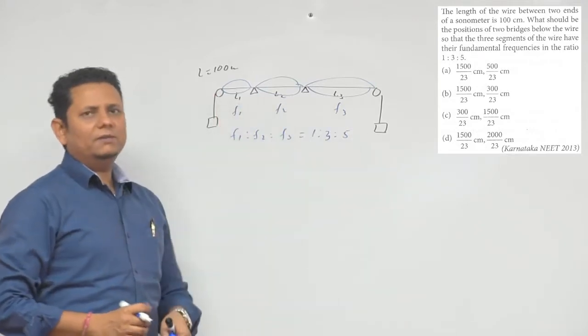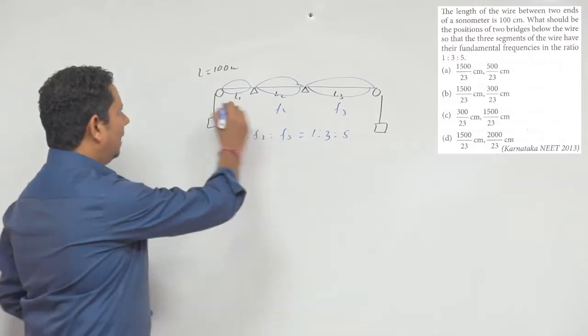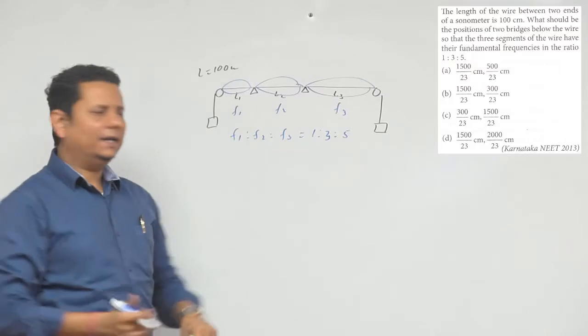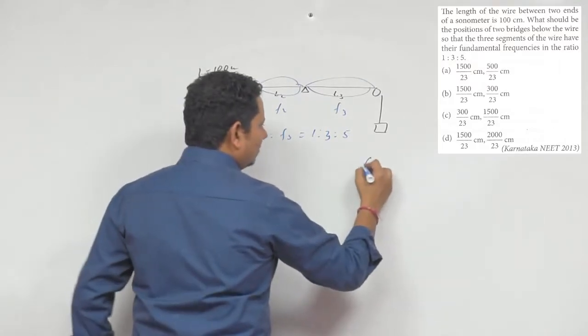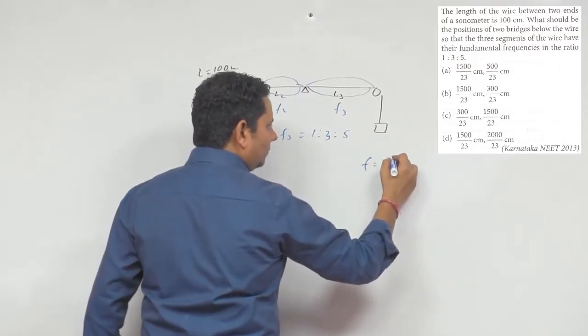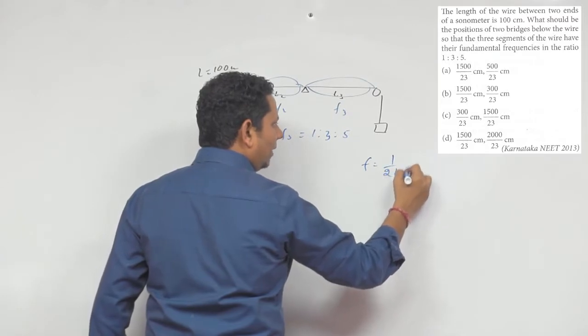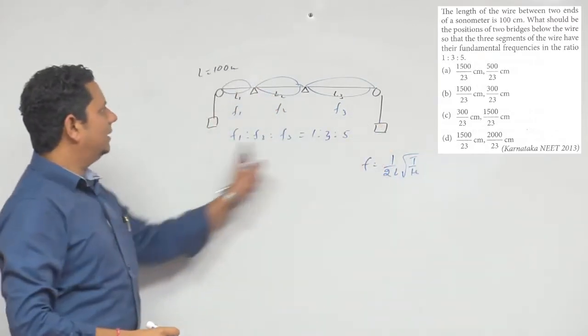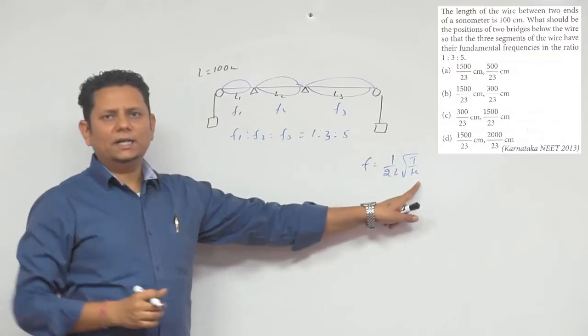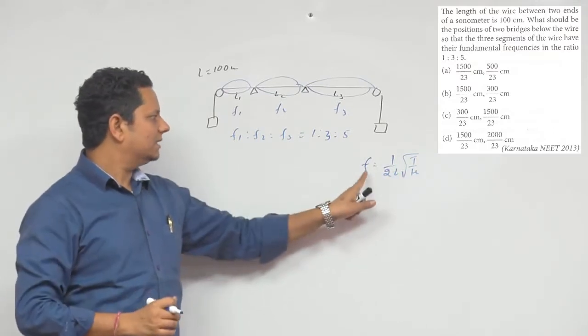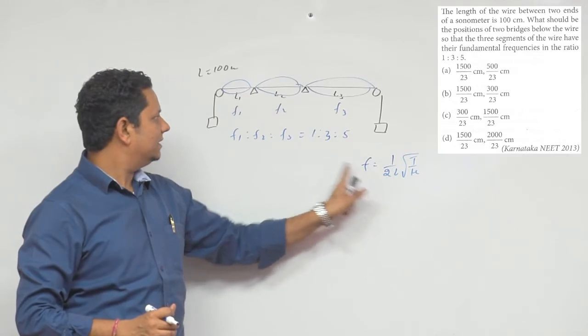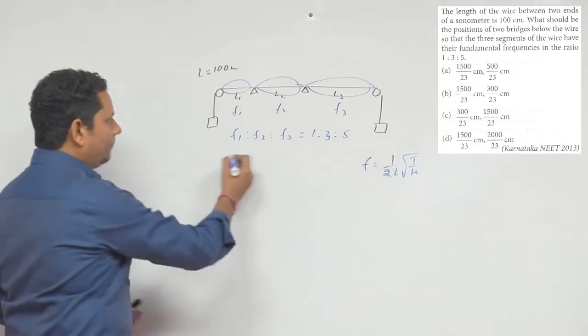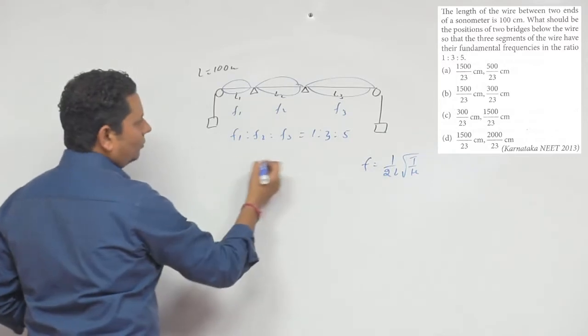So, L1, L2, L3 value we need to find for the sonometer wire here. The fundamental frequency will be equal to 1 divided by 2L under root T by mu. This will be the same fundamental frequency.